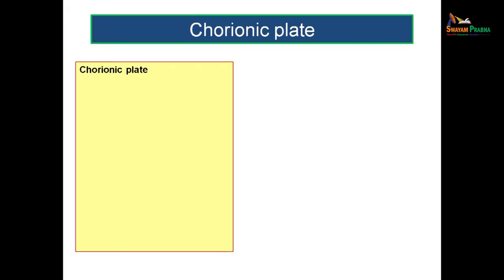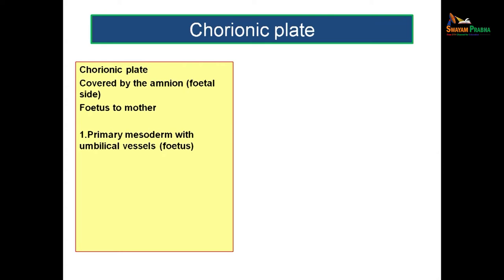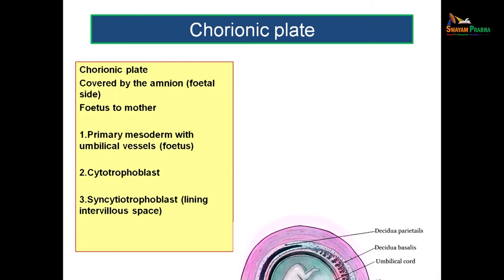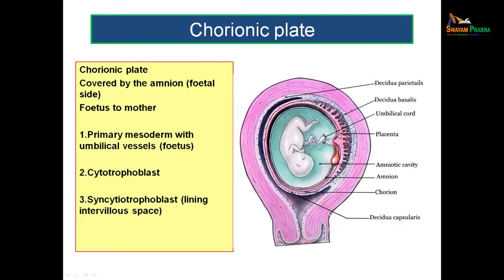Let us see each part of the placenta in detail. The chorionic plate is on the fetal side, covered by amnion. Tracing from fetus to mother, you first see the primary mesoderm with umbilical vessels, then the cytotrophoblast layer, then the syncytiotrophoblast layer lining the intervillus spaces. The syncytiotrophoblast actually lines the intervillus space between adjacent villi.